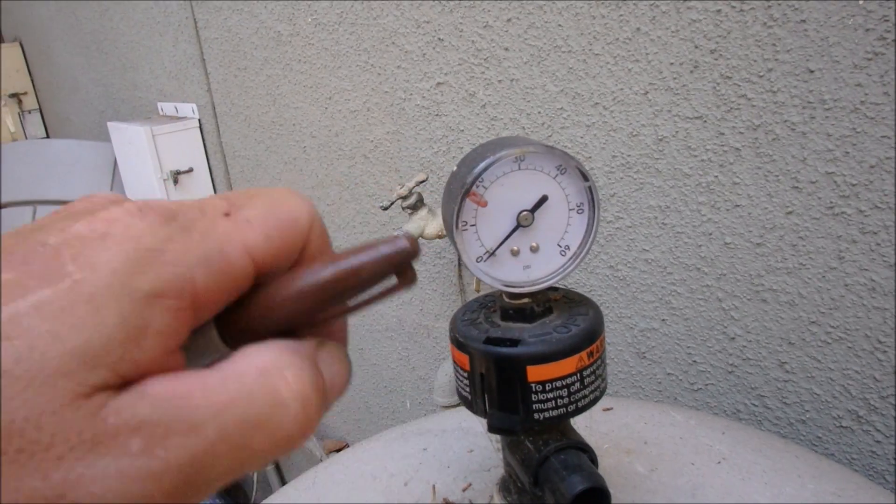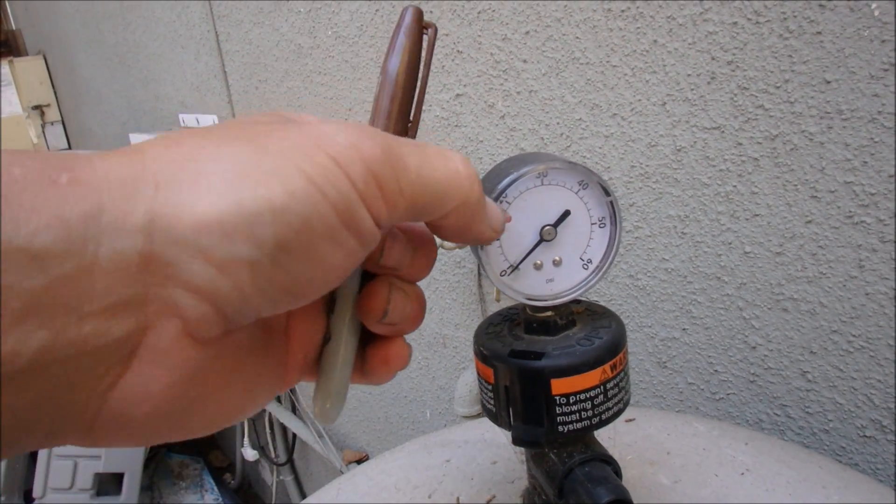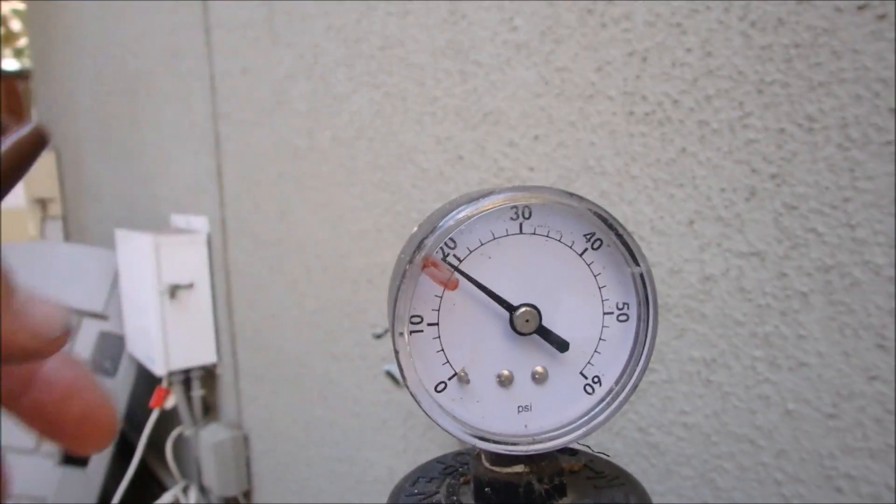One thing you want to do with your pressure gauge after cleaning it, if it doesn't have a dial built in, take a Sharpie to mark where it's at when you clean it. See, this filter is still clean.